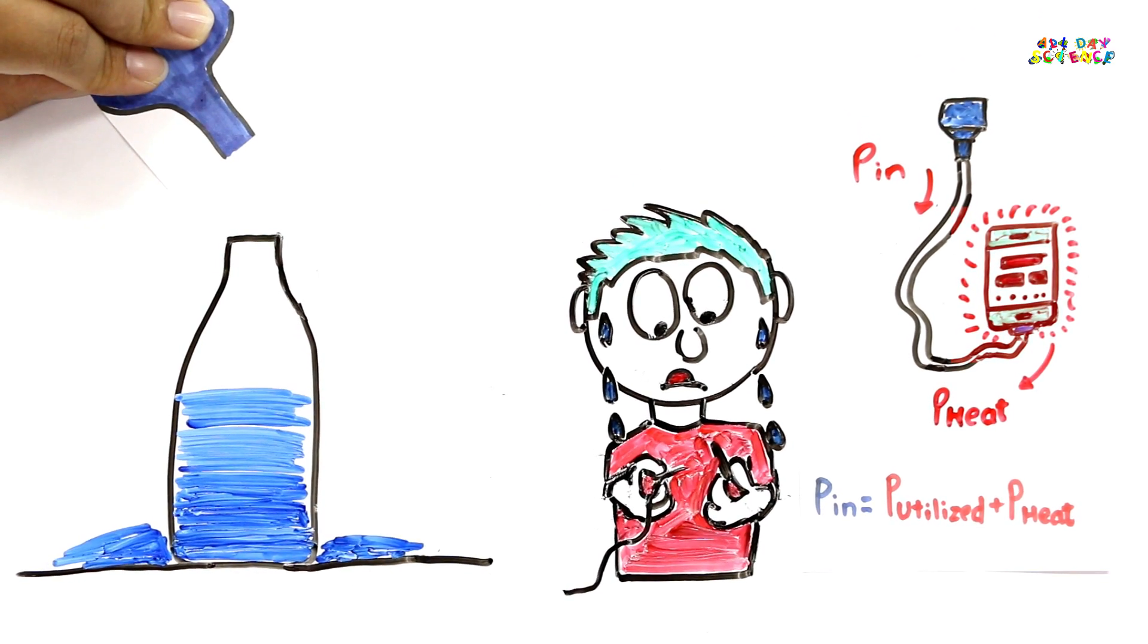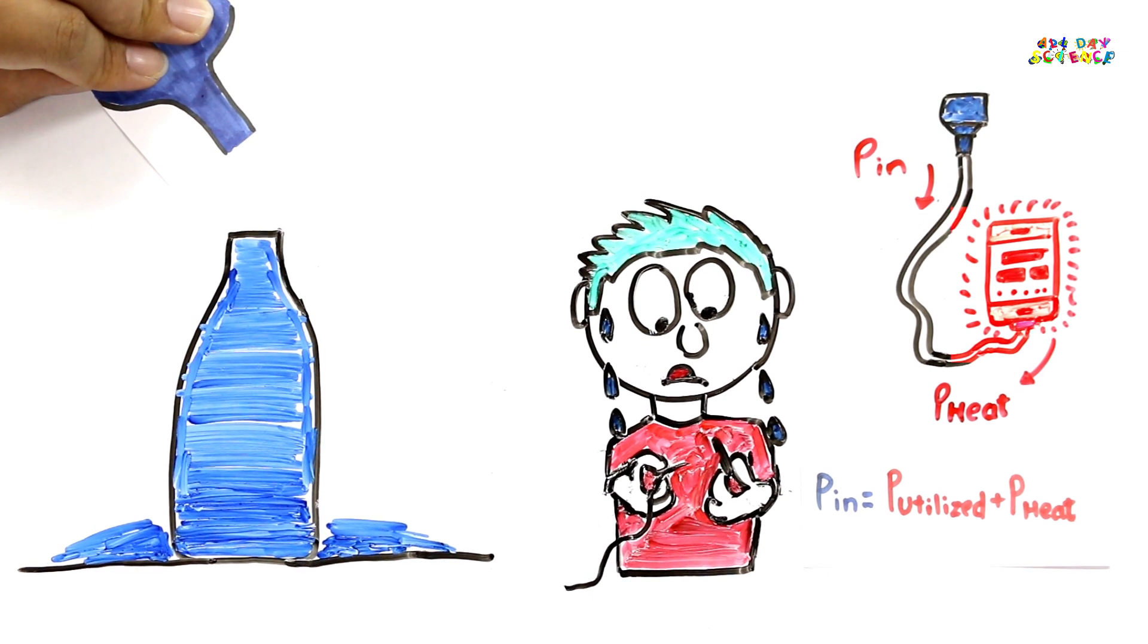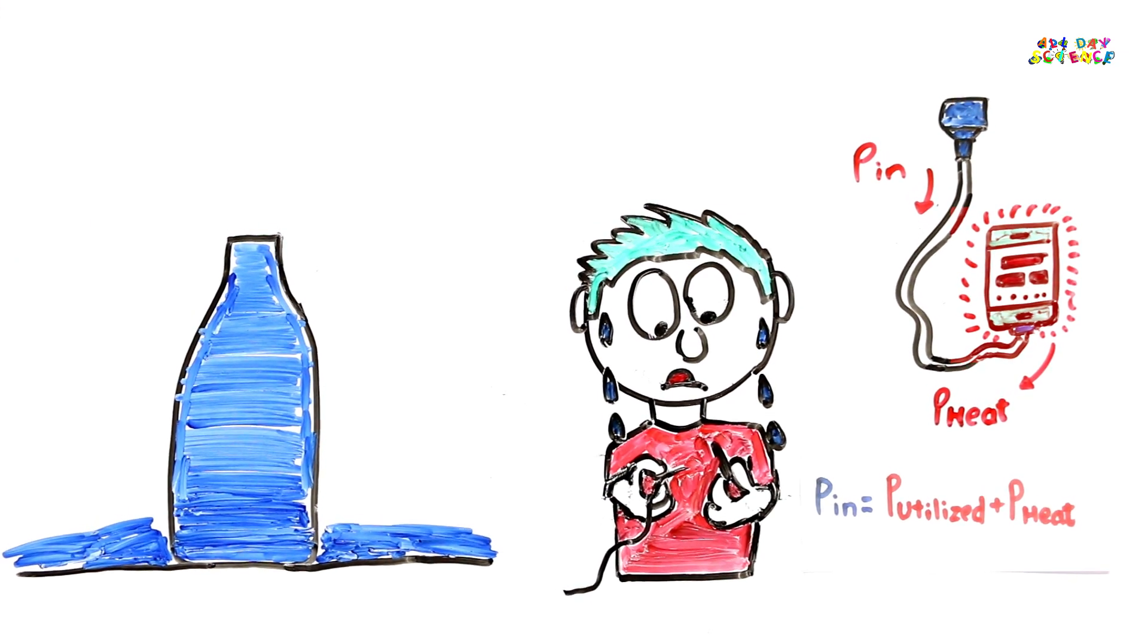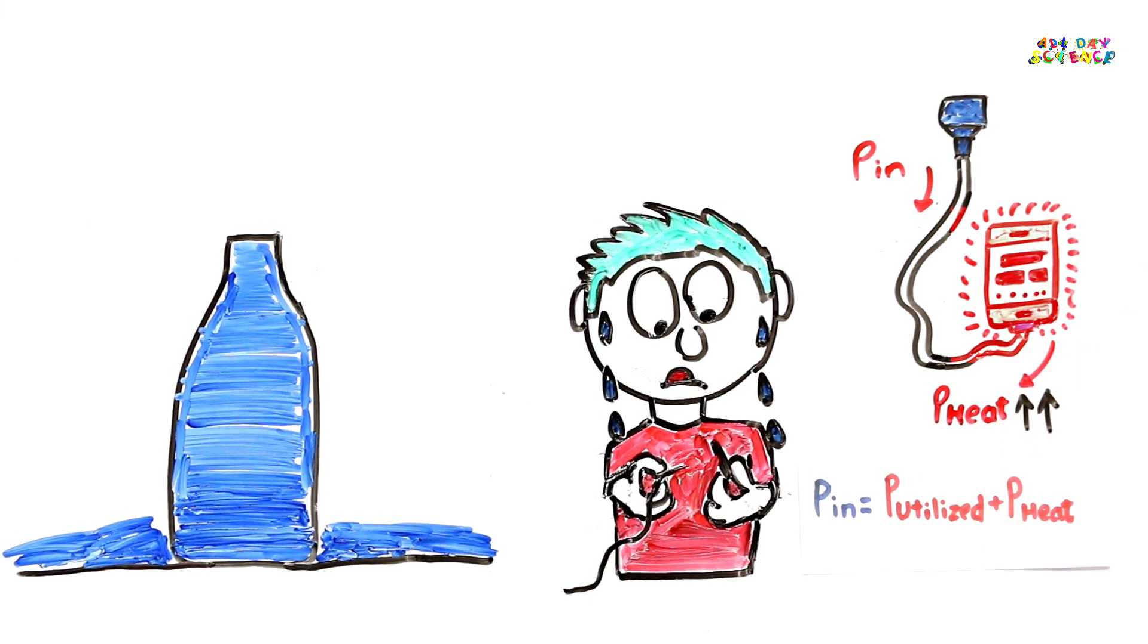This is what the extra heat represents while charging. Now, once the battery charges to its full capacity, all the energy that's taken in the form of electricity from the main source is converted into heat and emitted outside.